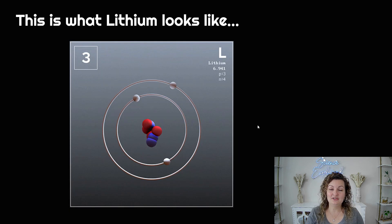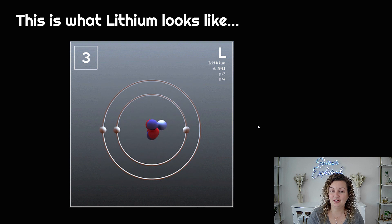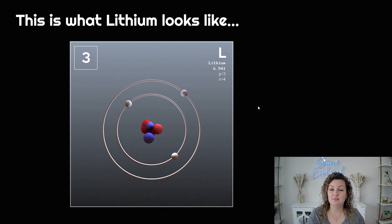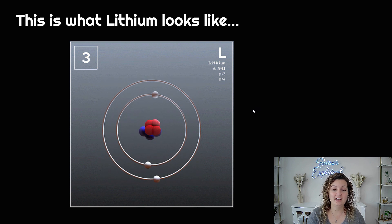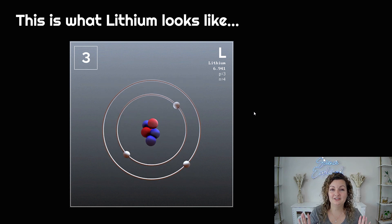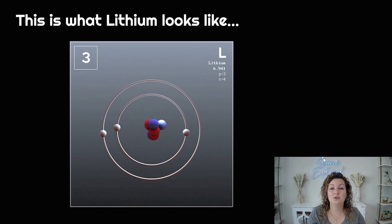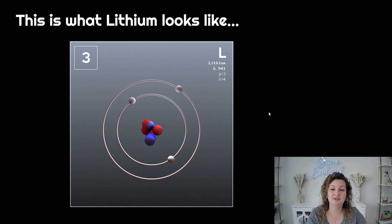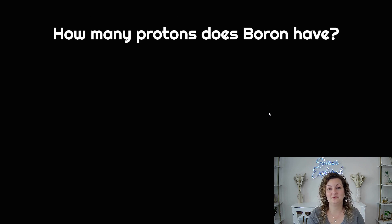So what does lithium look like? It looks like this right here. Lithium does have three protons, three neutrons — which we'll get to in a second — and then it's going to have three electrons in a neutral atom. Notice I'm saying neutral atom because protons are positive and electrons are negative, so they have to equal that number in order to be neutrally charged overall. So three protons, three electrons, and a neutral lithium atom.